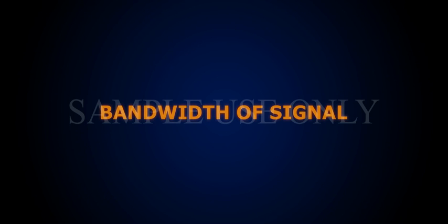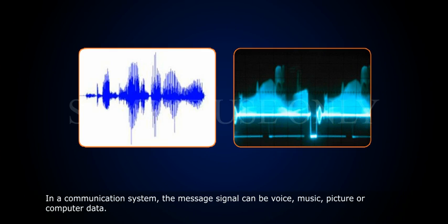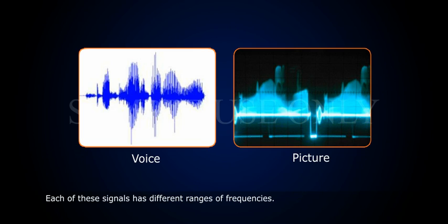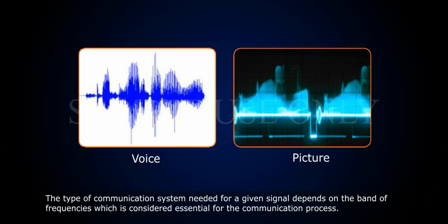Bandwidth of signal in a communication system. The message signal can be voice, music, picture, or computer data. Each of these signals has different ranges of frequencies. The type of communication system needed for a given signal depends on the band of frequencies, which is considered essential for the communication process.